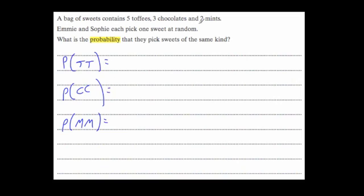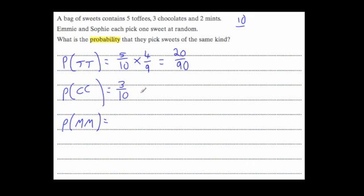There are 10 sweets altogether. The probability of the first one being a toffee is five out of ten. If we take out a toffee, that leaves nine sweets with four toffees, so we multiply by four ninths. That gives 20 over 90. For chocolate-chocolate: the first being chocolate is three tenths. Taking out a chocolate leaves nine sweets with two chocolates, so multiply by two ninths, giving six over 90.